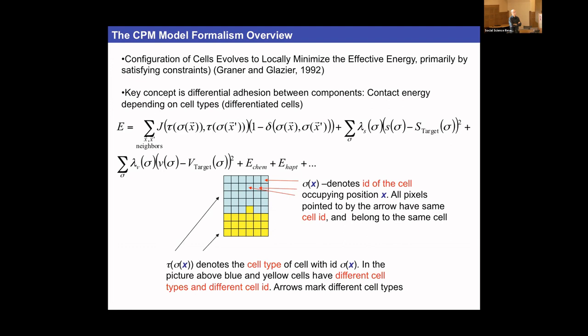The drag coefficient is not something you can directly derive — it's a complex function of all the system parameters. What we do is apply a constant force to a cell, measure velocity as a function of force, and calibrate the drag — essentially a falling ball experiment. Changing lambda_volume or lambda_surface, for example, will change the drag on the system.